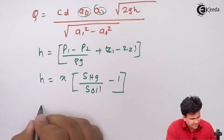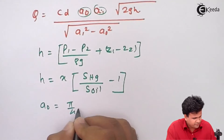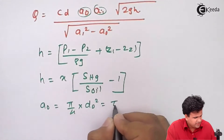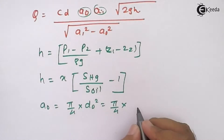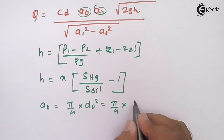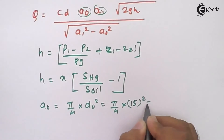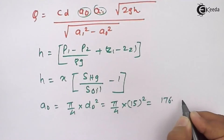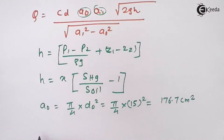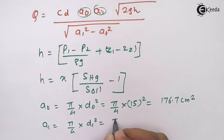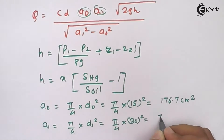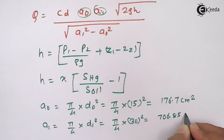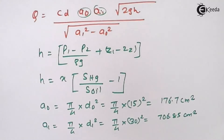A0 equals π/4 into D0 squared equals π/4 into 15 centimeters squared, which comes out to 176.7 centimeter square. Similarly, A1 equals π/4 into D1 squared equals π/4 into 30 centimeters squared, which equals 706.85 centimeter square. So we have calculated A0 and A1.